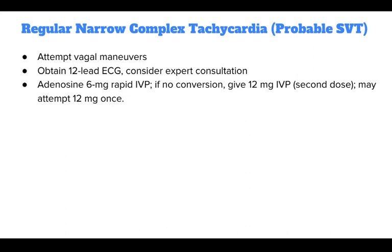For regular narrow complex tachycardia, or probable SVT, attempt vagal maneuvers, obtain a 12-lead ECG, and consider expert consultation. For drugs, give adenosine 6 mg rapid IVP. If there is no conversion, give 12 mg IVP as the second dose — you may only attempt that 12 mg dose once.